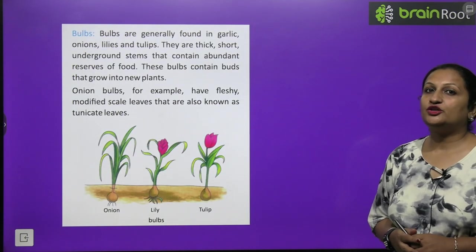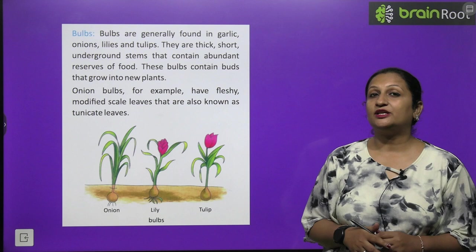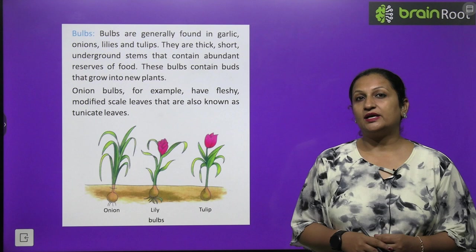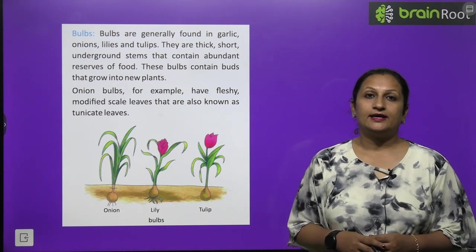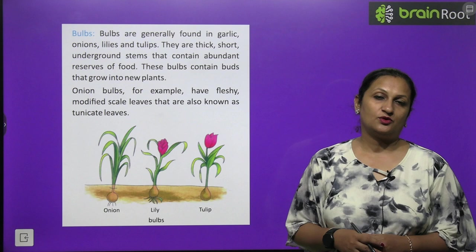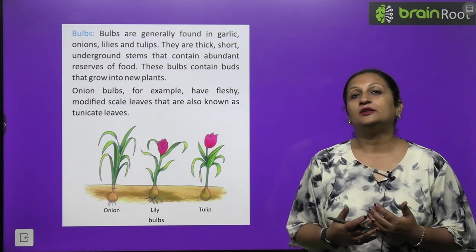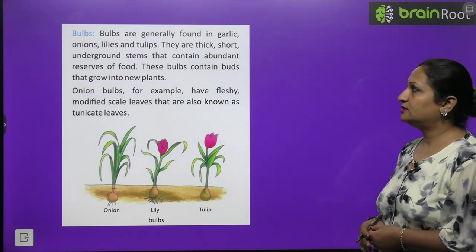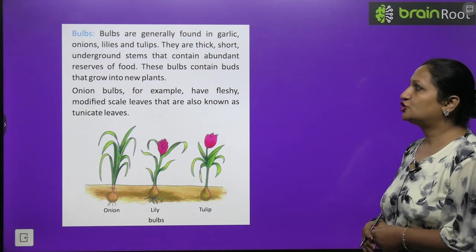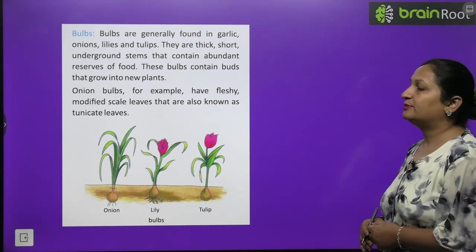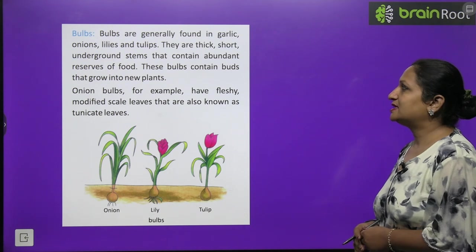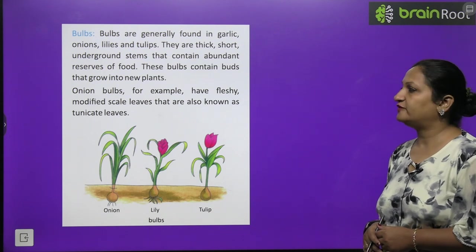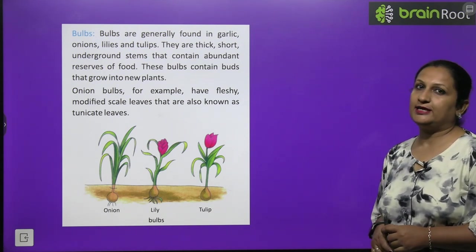Then you have bulbs children. You have seen onions. If we leave onions for some time, green colored leaves start emerging from them. If at that time we plant that onion in soil and water it and provide it favorable conditions, then we see that new plant development happens there. Bulbs are generally found in garlic, onions, lilies and tulips. They are thick short underground stem that contains abundant reserves of food. These bulbs contain buds that grow into new plants. Onion bulbs for example have fleshy modified leaves that are also known as tunicate leaves.